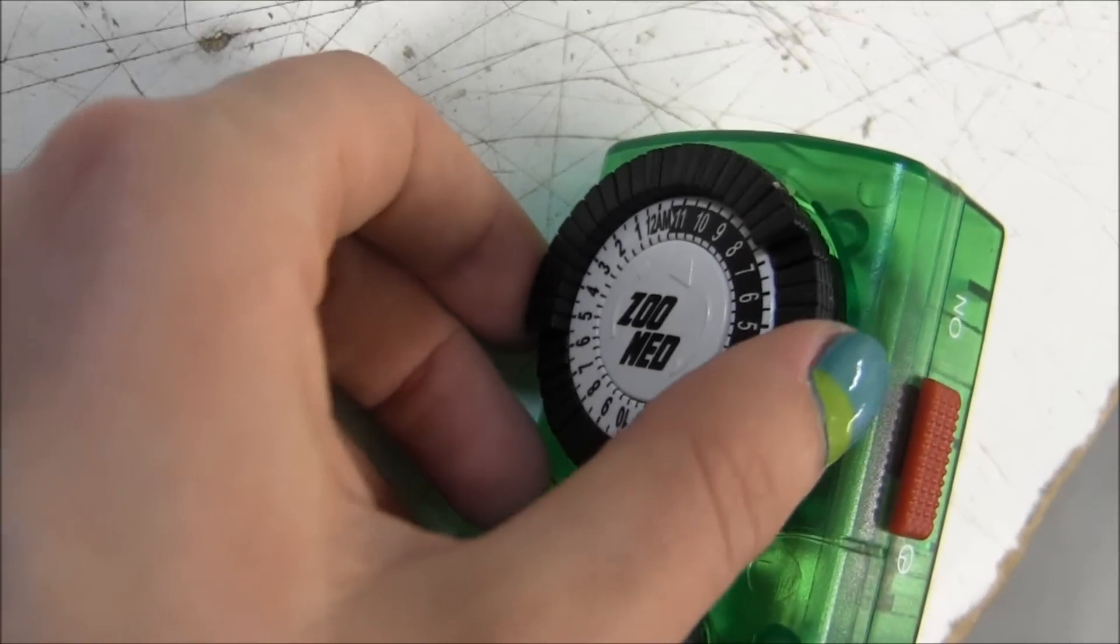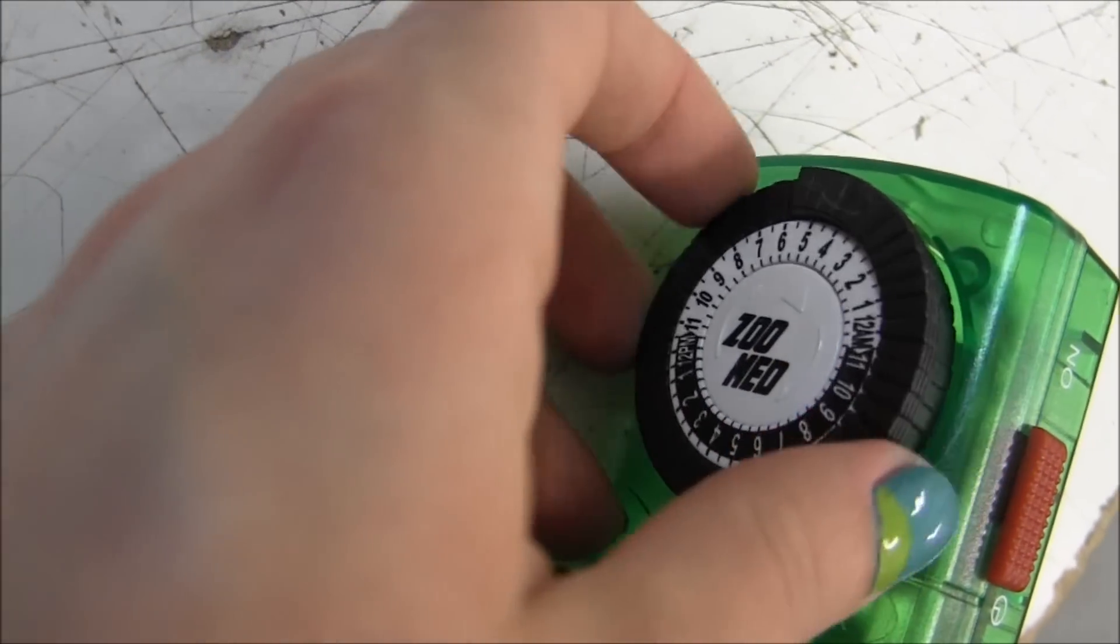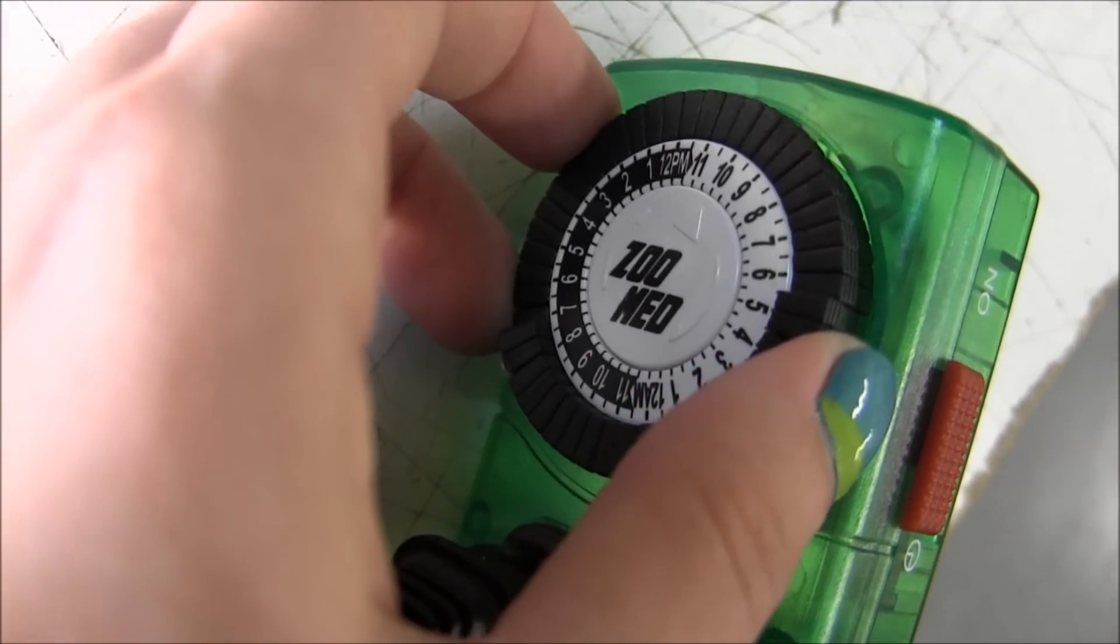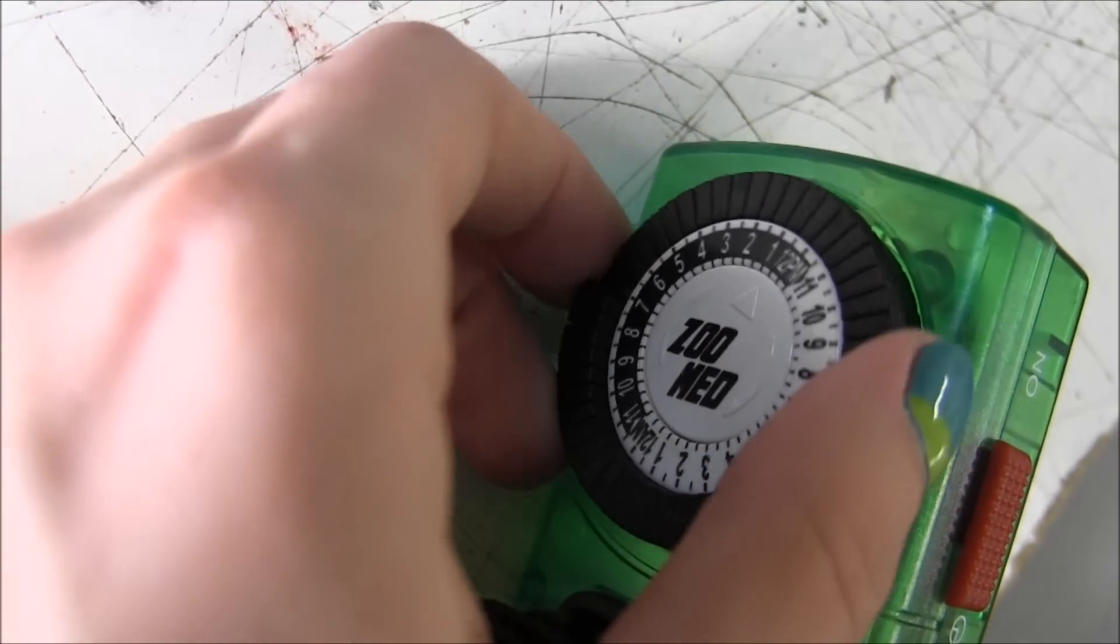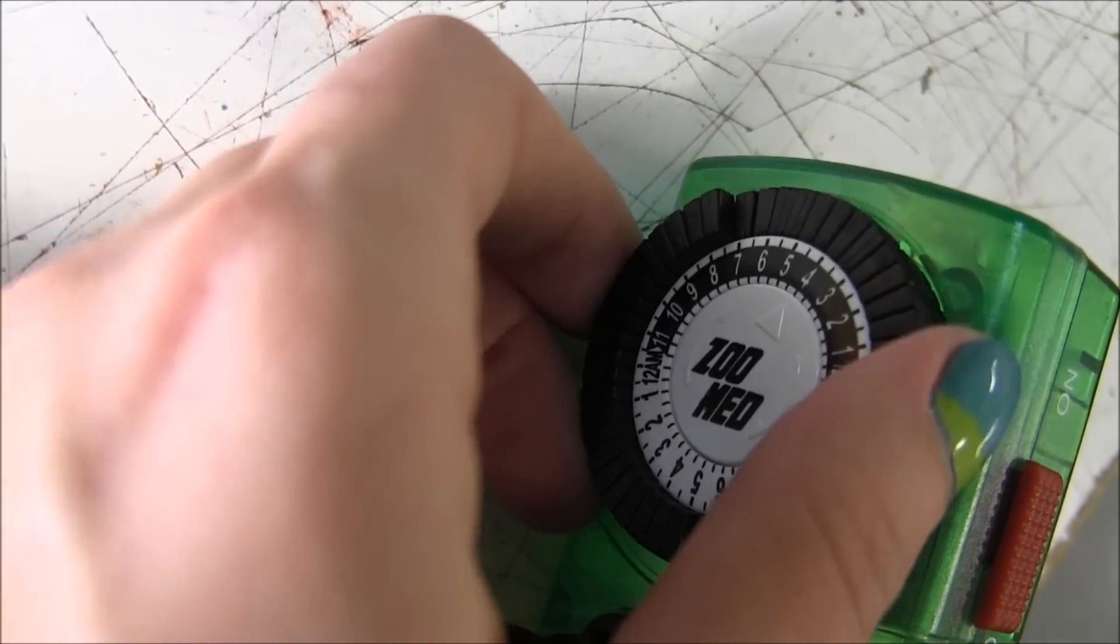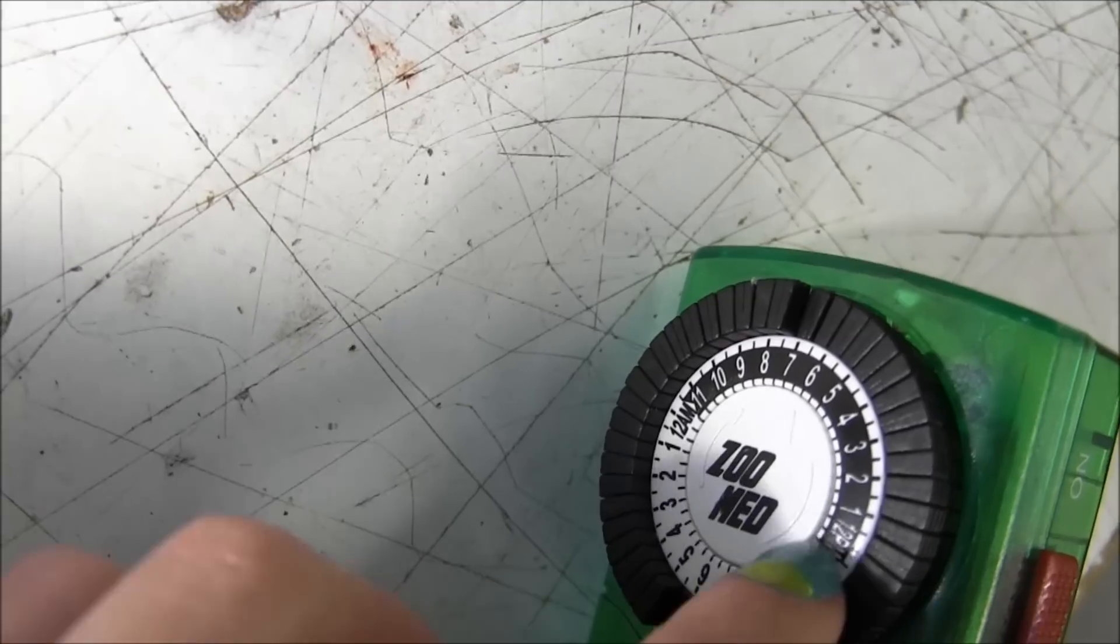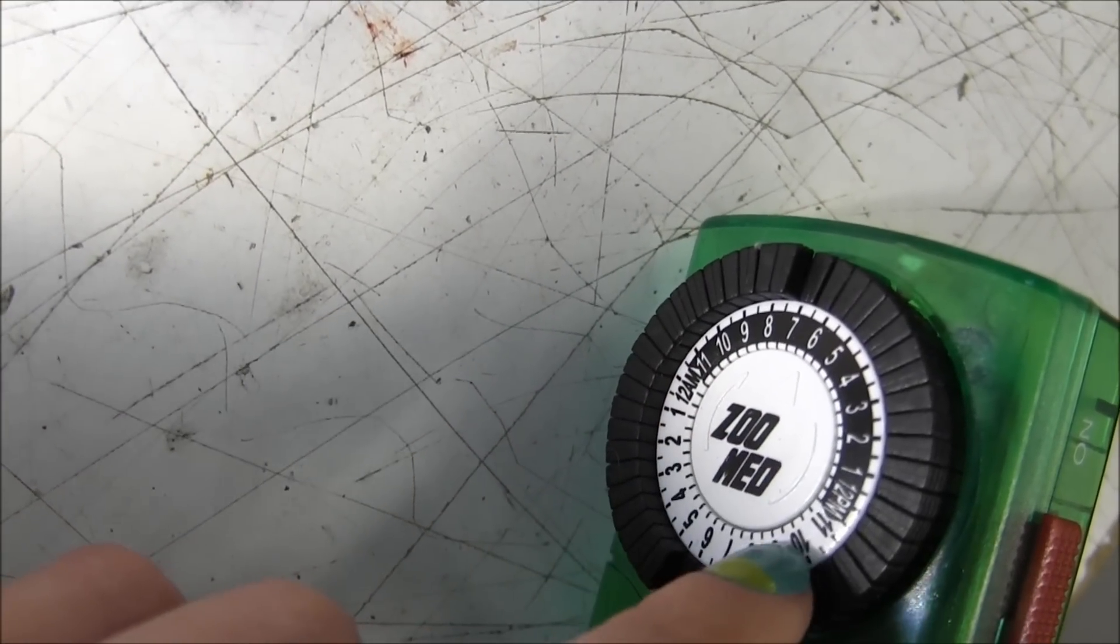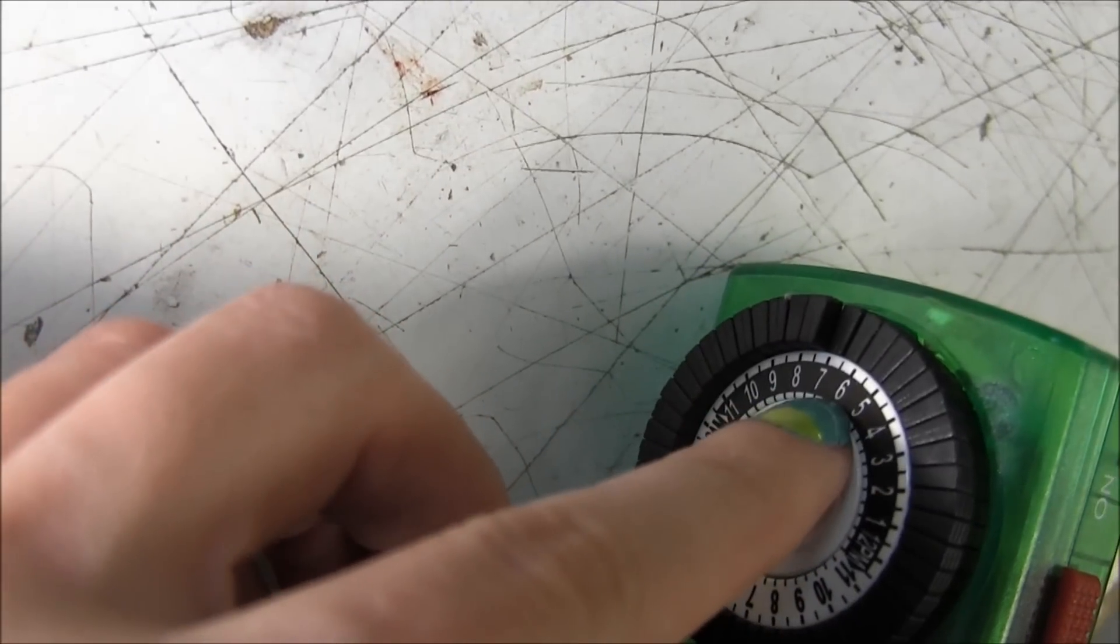So we're going to go ahead and turn this to the actual time of day, which here it is about 6 in the evening. So you see this is the dark would be night time, light would be day time. So this will be 6 in the evening.